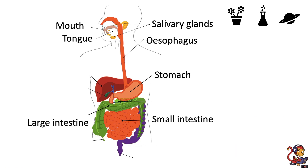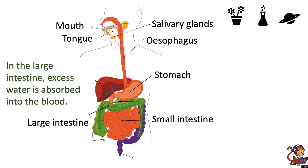The food then moves into the large intestine. In the large intestine excess water is absorbed into the blood and undigested food forms faeces.